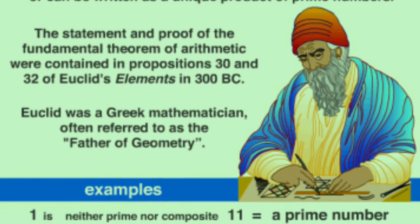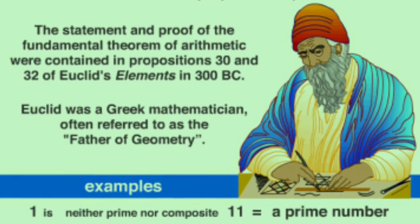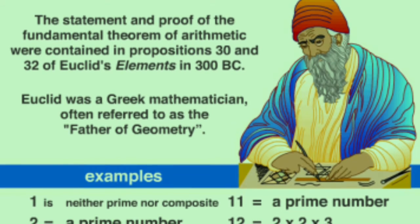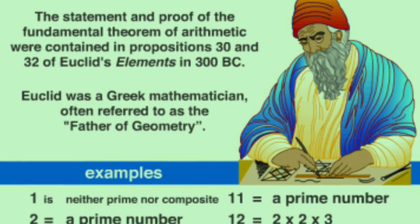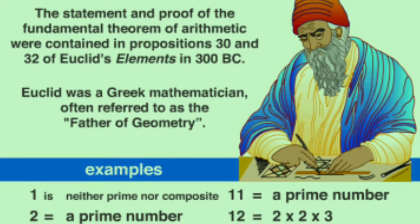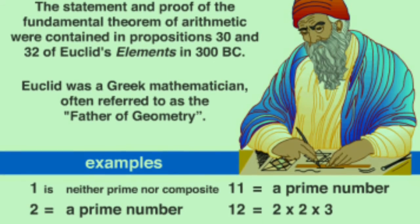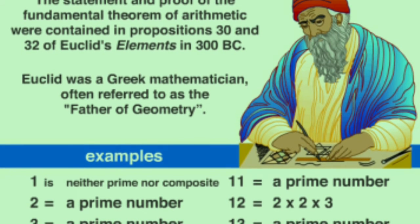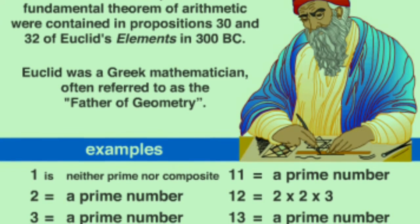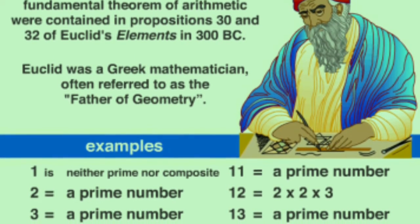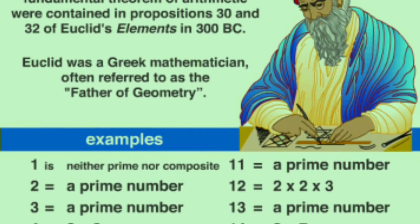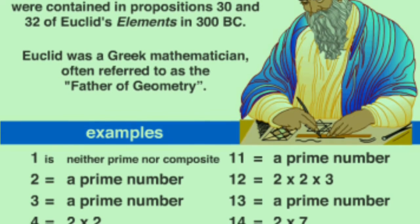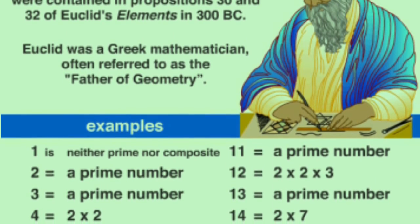The statement and proof of the fundamental theorem of arithmetic were contained in propositions 30 and 32 of Euclid's Elements in 300 BC. Euclid was a Greek mathematician and he is known as the father of geometry.